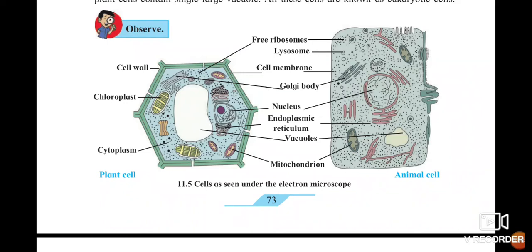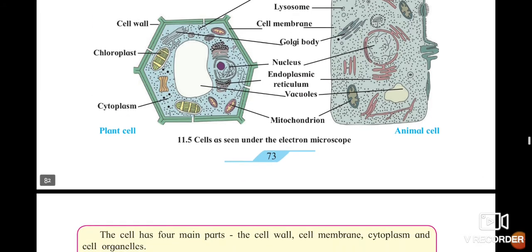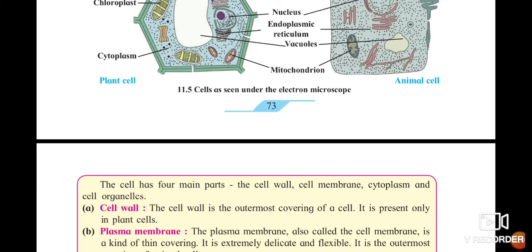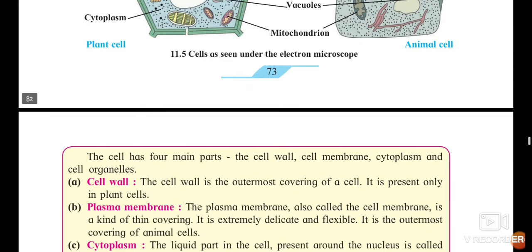Welcome all. We have already started our 11th lesson, that is cell structure and microorganisms. That day we have seen the plant cell and animal cell. Here you can see there are some cell organelles which are present. From that we are going to study each and every function of these organelles. The cell has four main parts: the cell wall, the cell membrane, the cytoplasm, and the cell organelles.